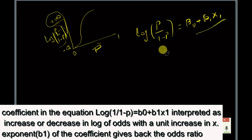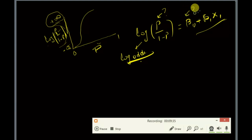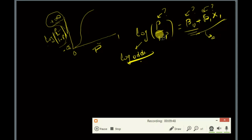This transformation is called the log of odds. Now we can use this transformed y to run a linear regression type equation. We still don't know the coefficients, but right now we're focused on how to get the probability p — we'll address the coefficients separately.